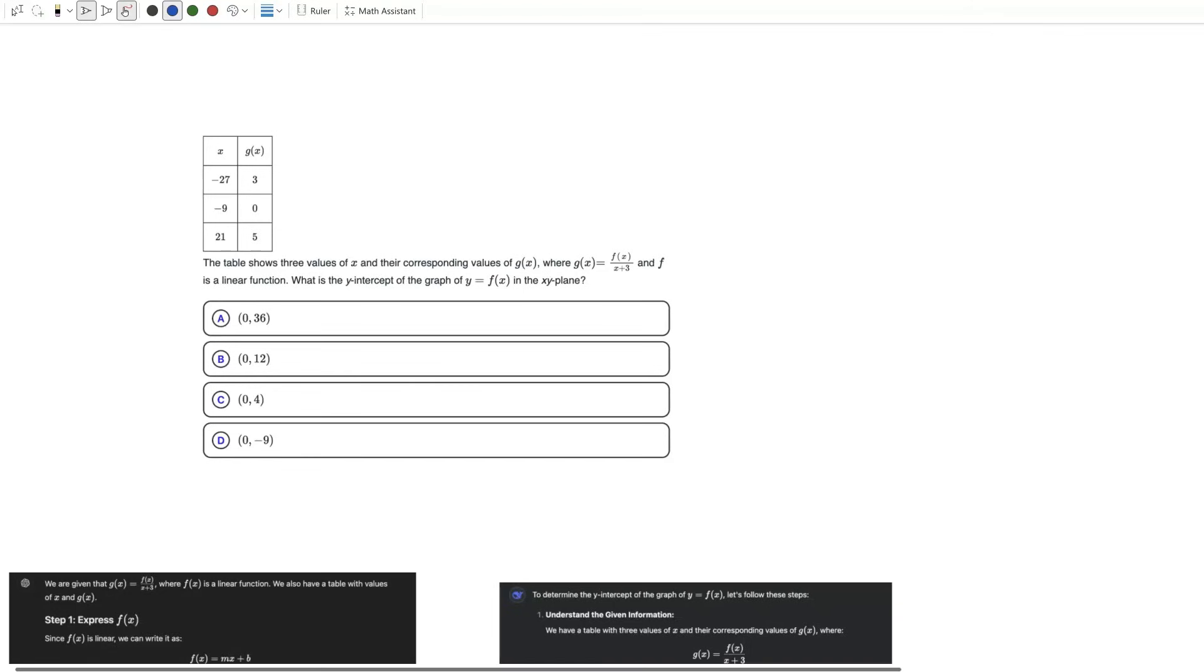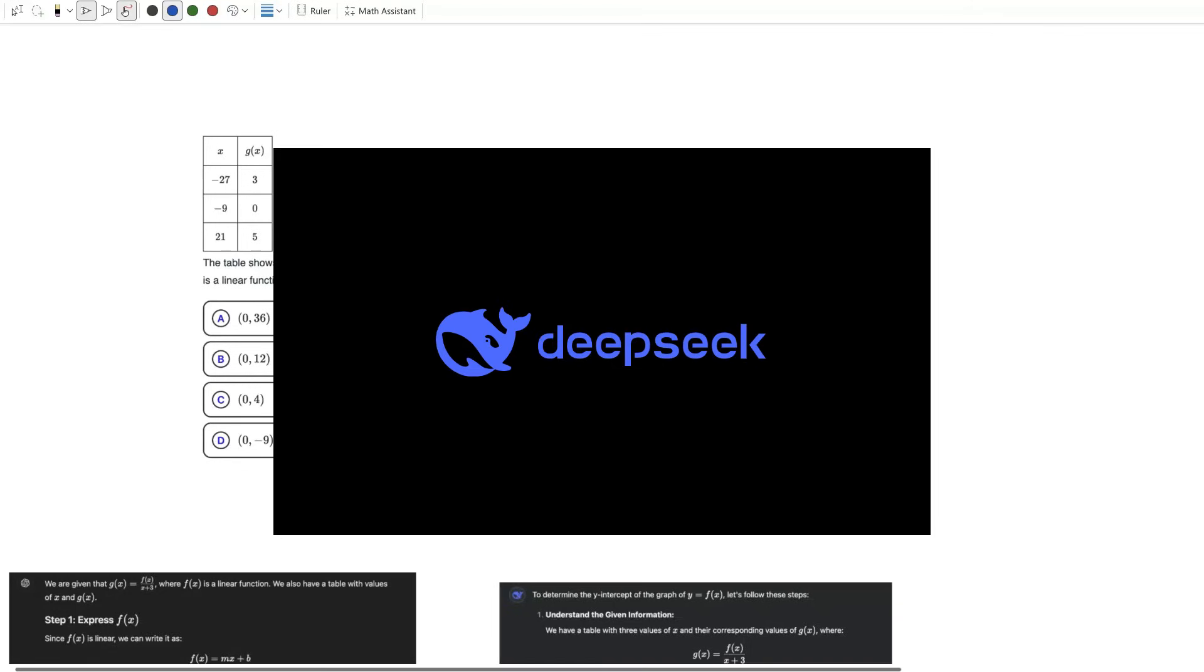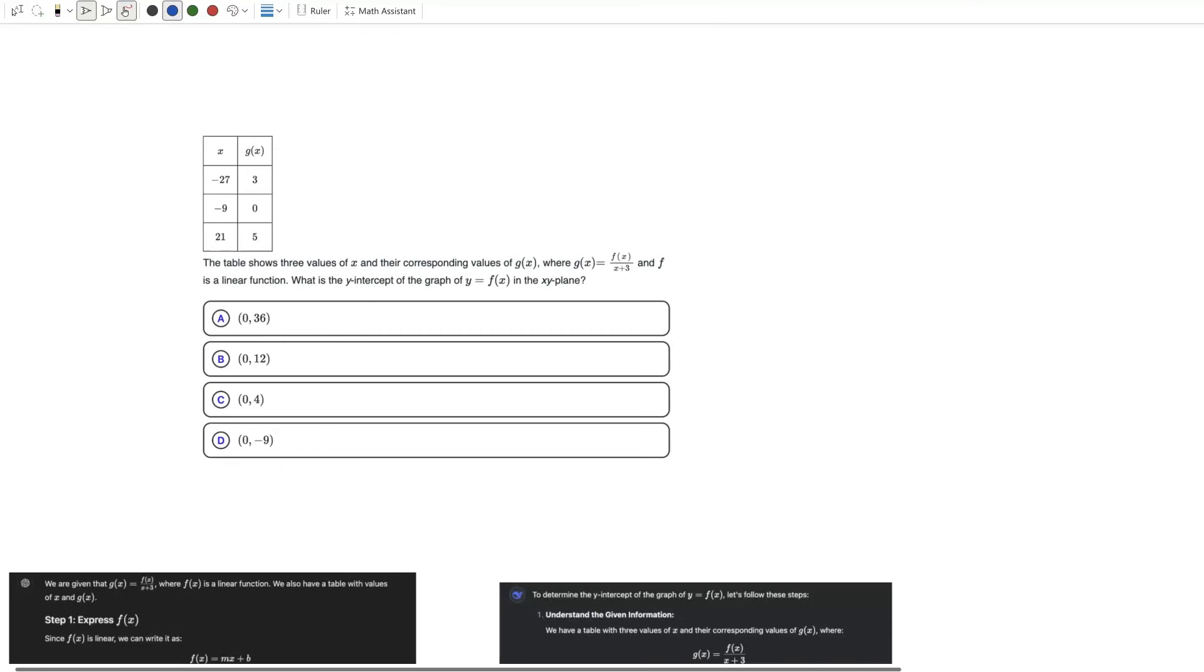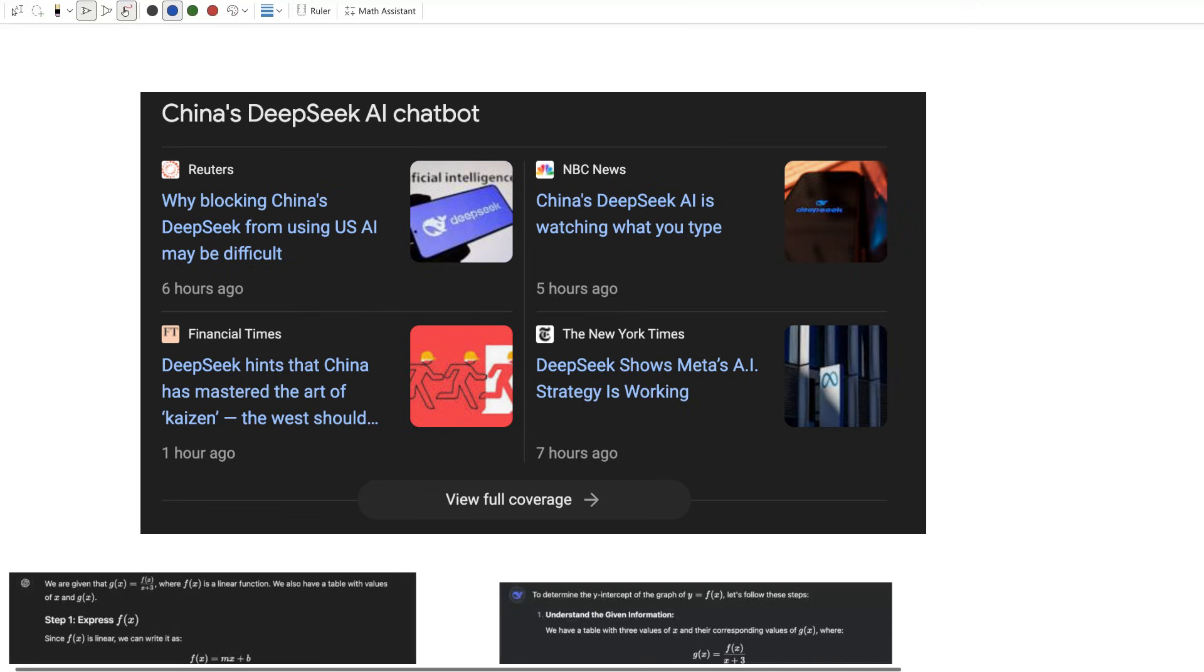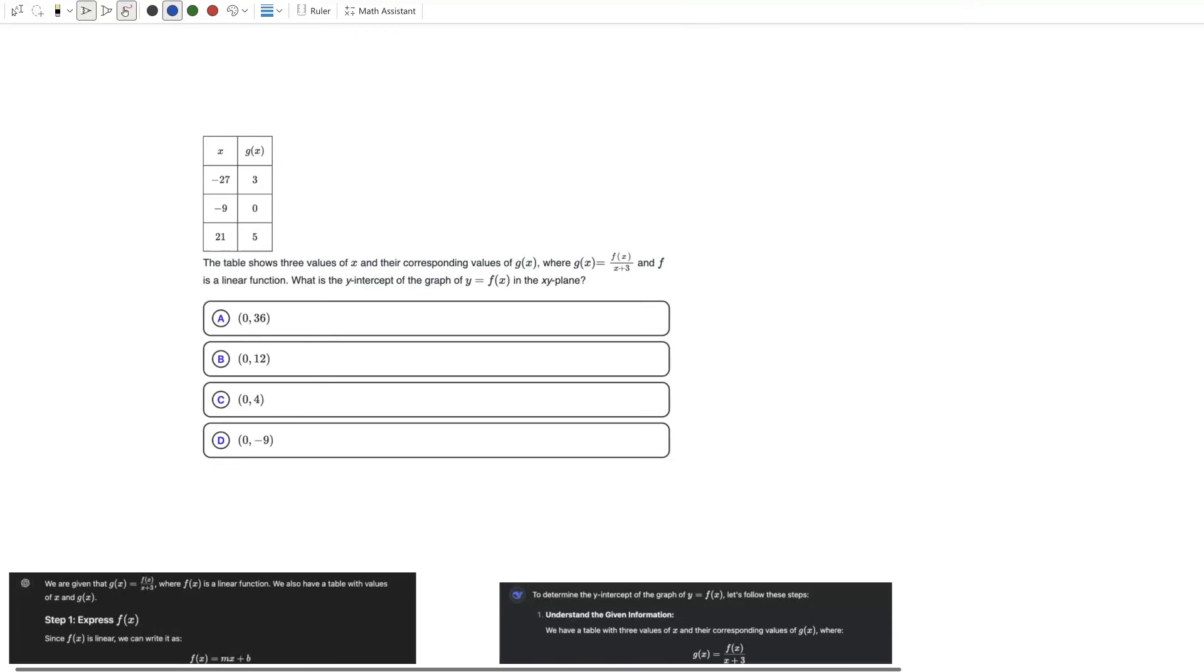So there's a new AI model called DeepSeek that has been developed, which is trained on the same data as ChatGPT at a fraction of the cost, and that's why it's making headlines. But today we're going to see which AI model, ChatGPT or DeepSeek, is better at solving SAT questions.